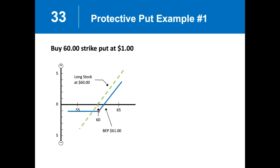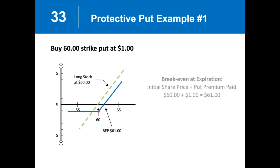Here is the P&L diagram of our protective put. The green dotted line shows we own the stock at $60, currently trading at $65. The break-even is our stock purchase price plus what we paid for the put option — $60 for the stock plus $1 for the put equals a break-even of $61. The maximum loss for this trade is the $1 premium we paid for the option.